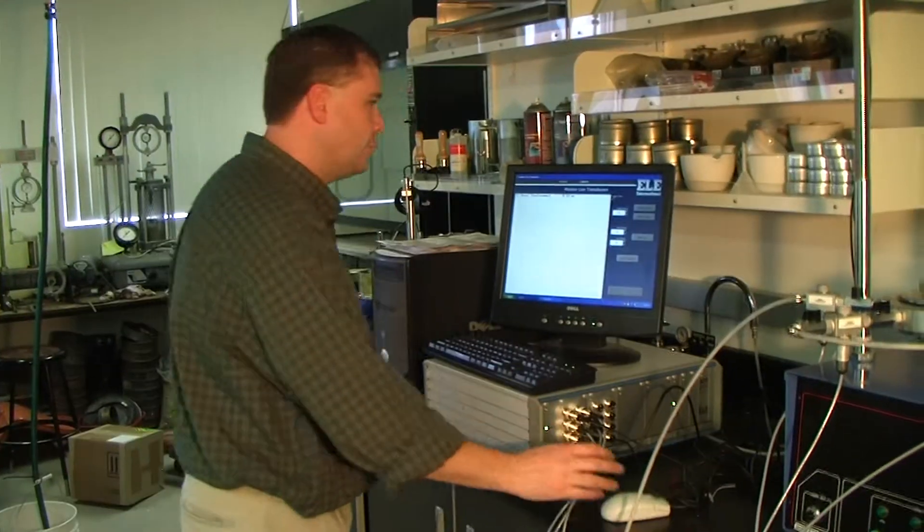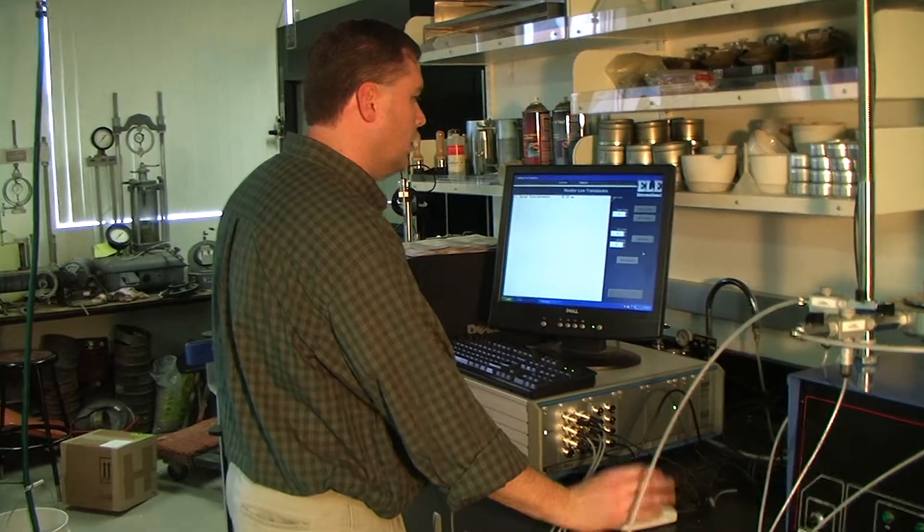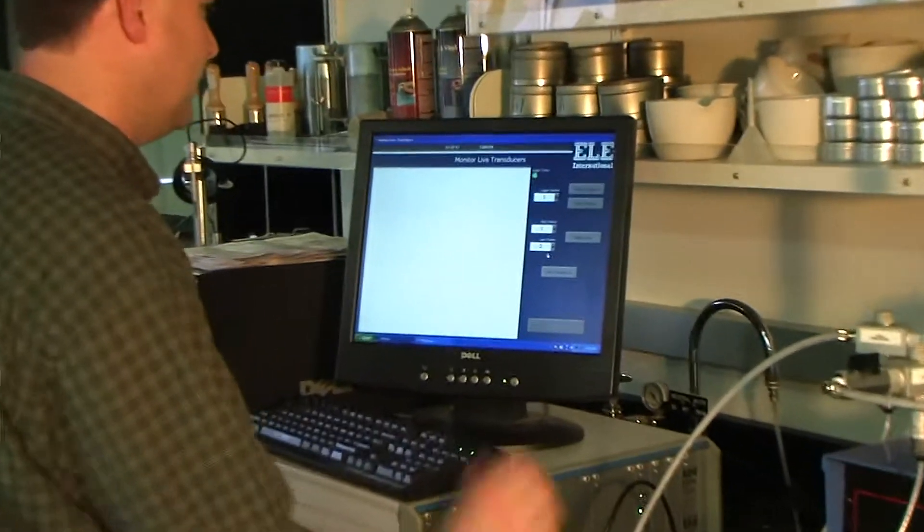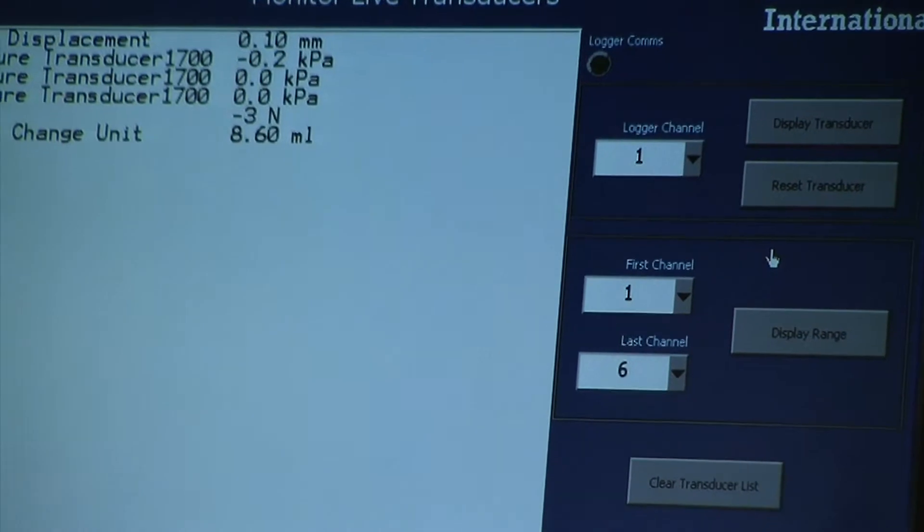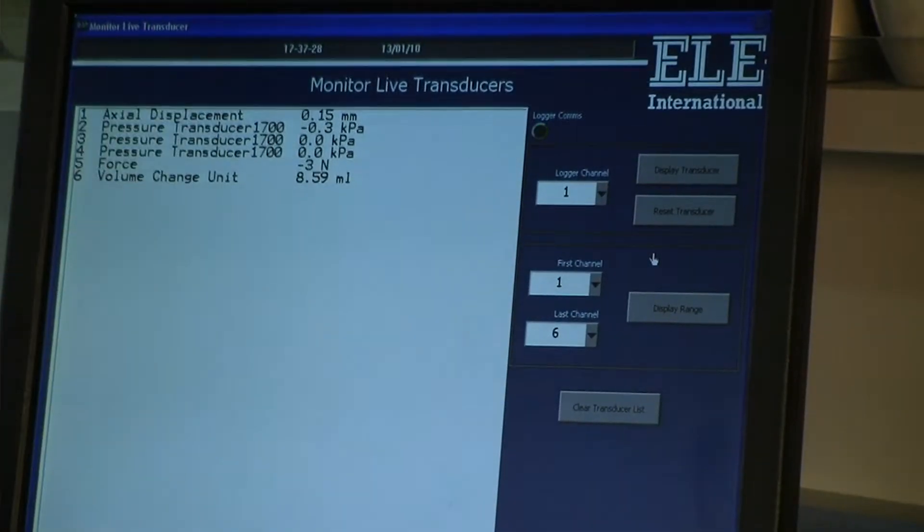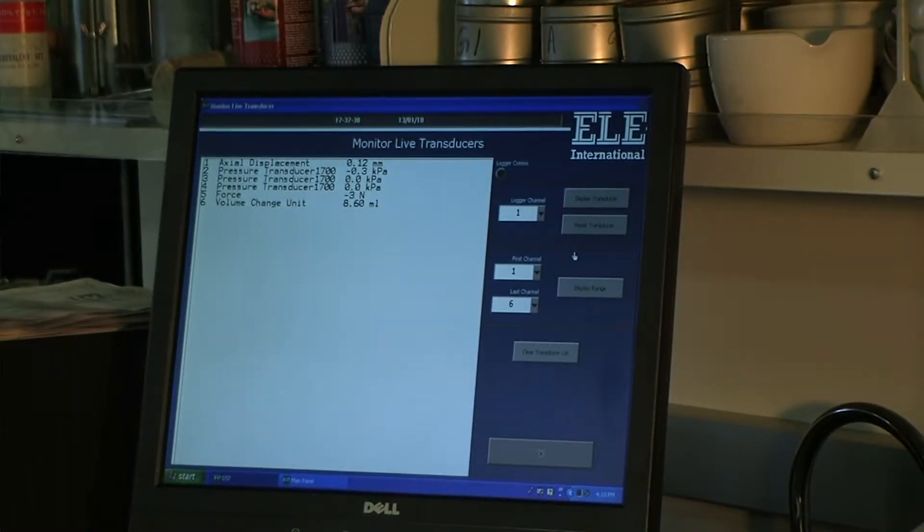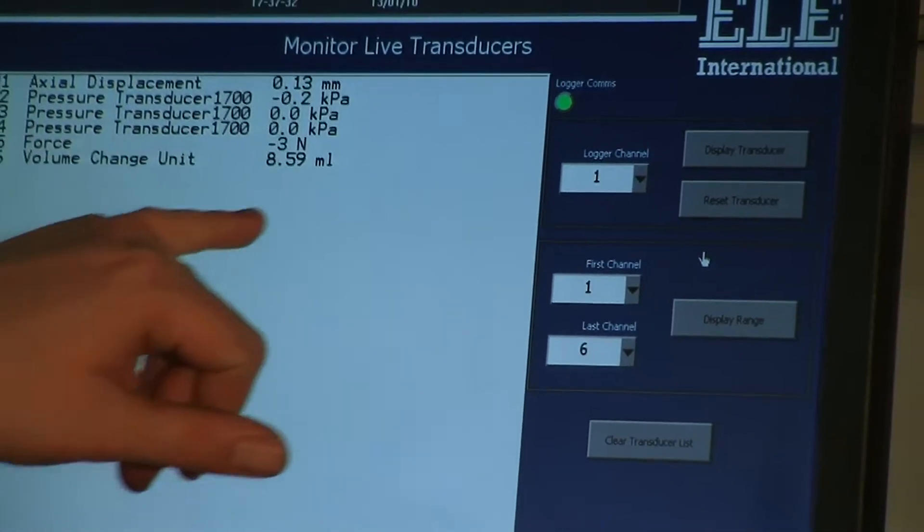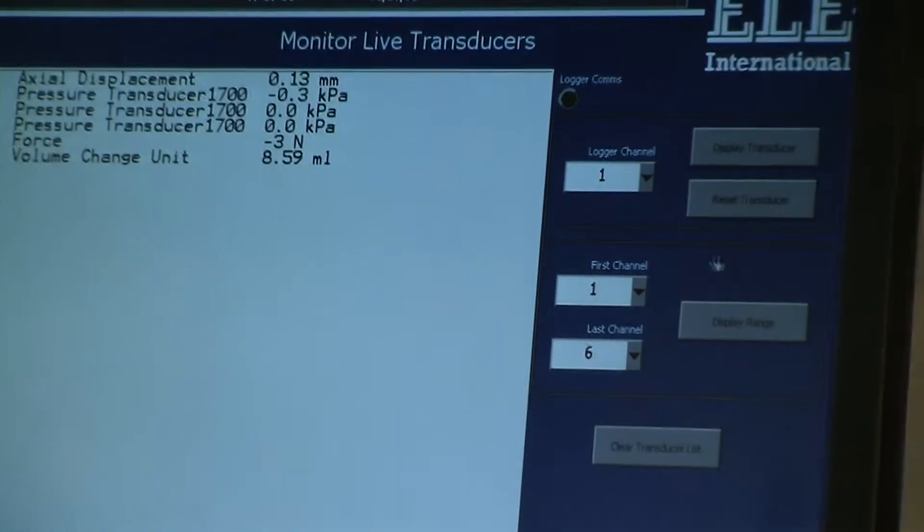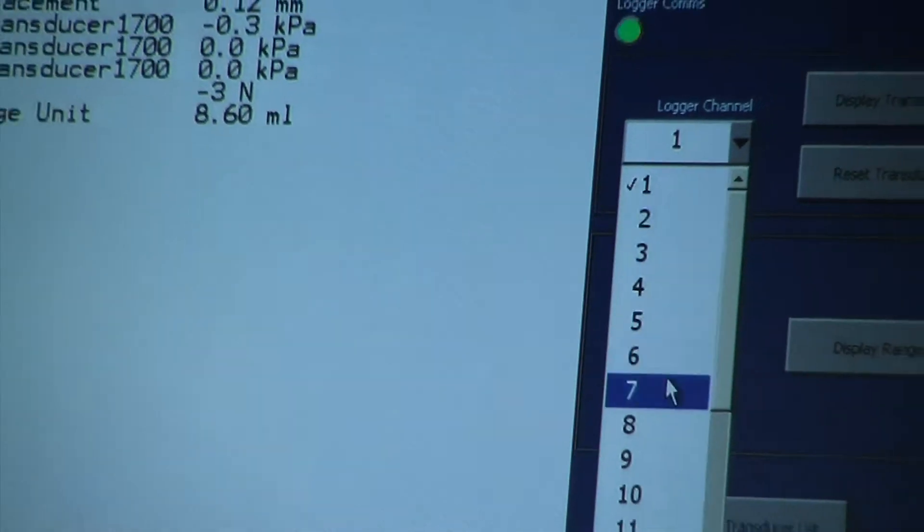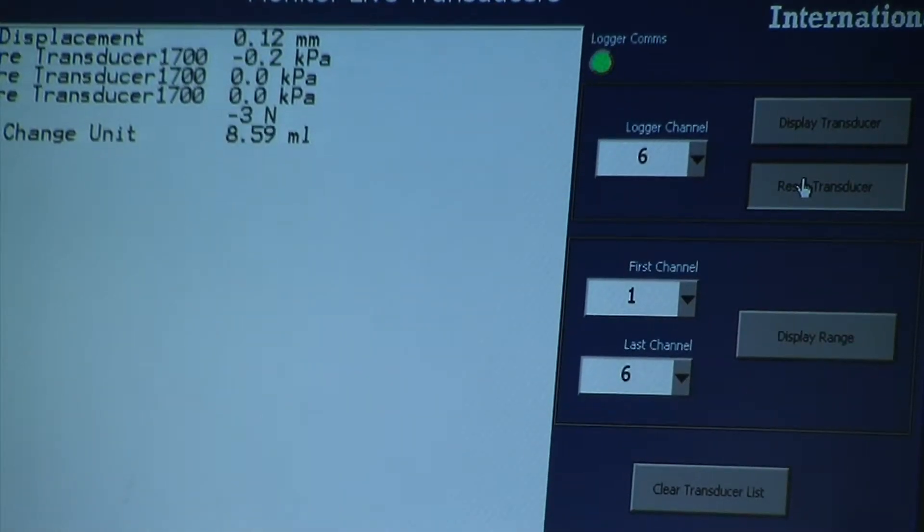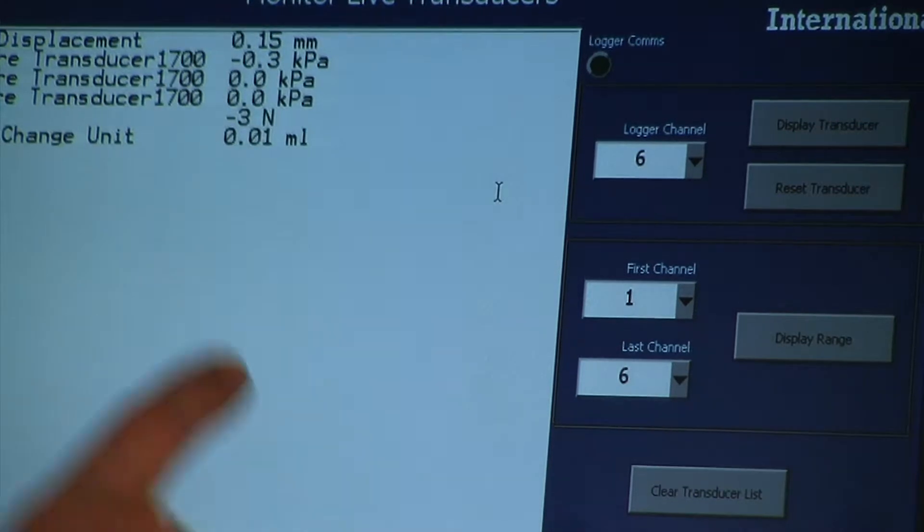Okay, now what we can do on the screen here is we can say, okay, instead of just looking, to eliminate that, we can clear the transducer list, which eliminates that. And we can look at the range. I have one through six, and I can hit the display range button. And that allows me to monitor all six transducers that I have connected in right now. And now the volume change unit is reading 8.6 milliliters. And I want to go ahead and zero that. Are you sure? And now it's back down to zero milliliters.